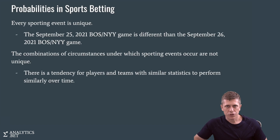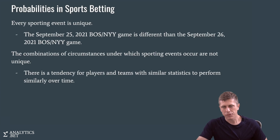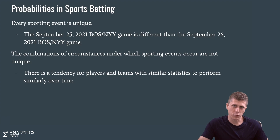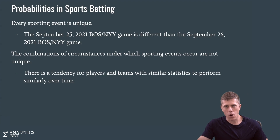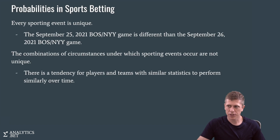Later on in this course, we'll talk about how we can start to estimate our own probabilities from data, and we'll get a better sense of what we mean by probability in the sports betting context. For now, the most important thing is that probability is a frequency — it's how often some event occurs. From a bettor's standpoint, the probability is how often we win our bet. To be profitable bettors, we have to be winning our bets often enough to overcome the bookmaker's vig and to make it worth placing the bet at the odds being offered.